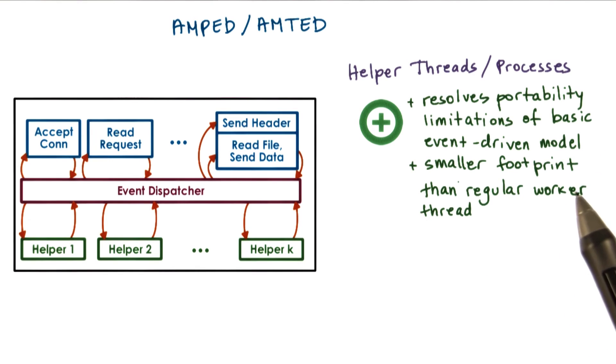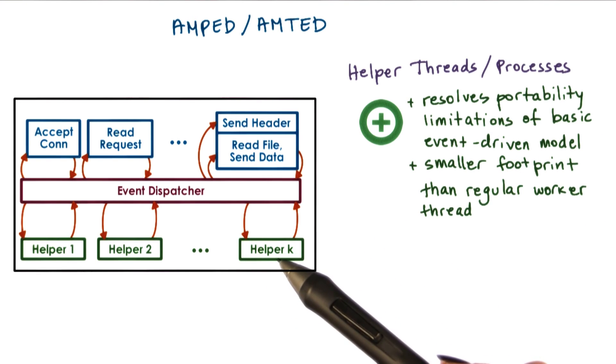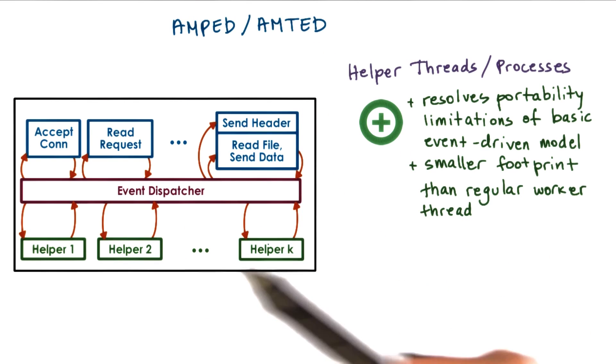In the multiprocess or multithreading model, a worker has to perform everything for a full request, so its memory requirements will be much more significant than the memory requirements of a helper entity. In addition, with the AMPED model, we will have a helper entity only for the number of concurrent blocking IO operations.